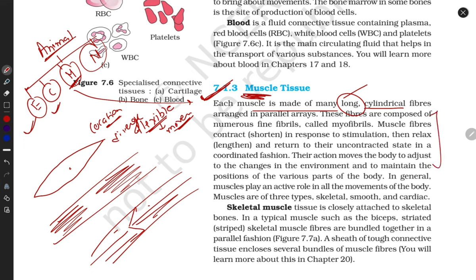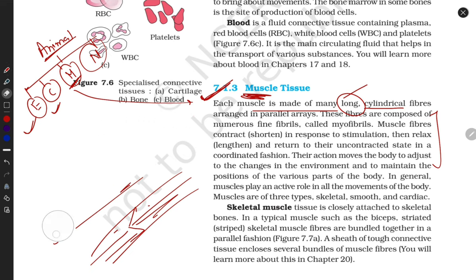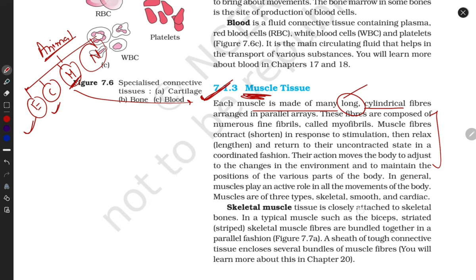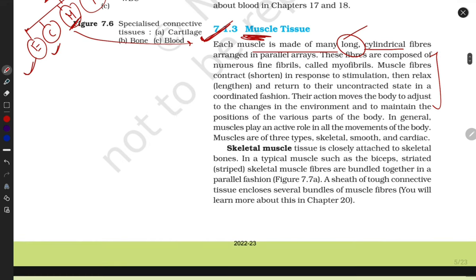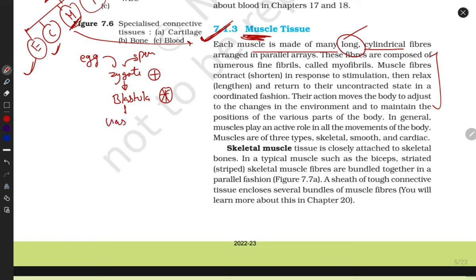Let me tell you some brief things about how muscle cells originate. I'm drawing a flow chart for you. We form with the fusion of egg and sperm - zygote. The zygote divides and further changes - this is the zygote, and it divides to form blastula, which further divides to form gastrula.